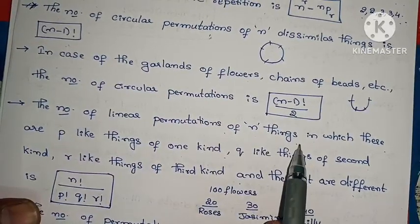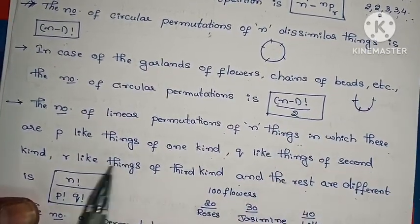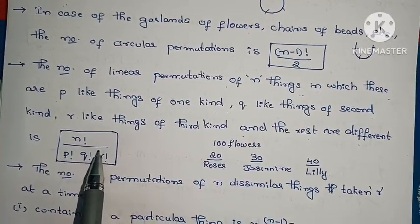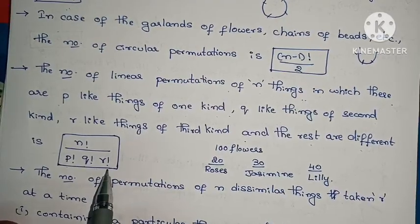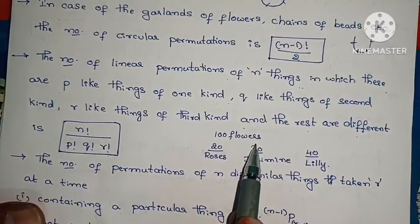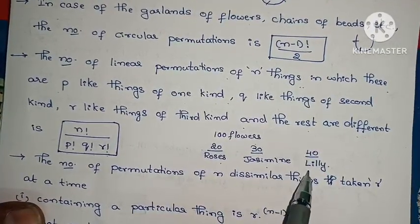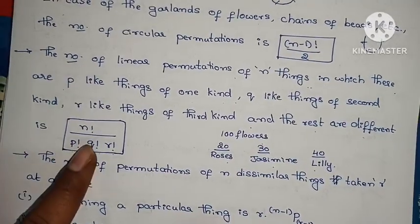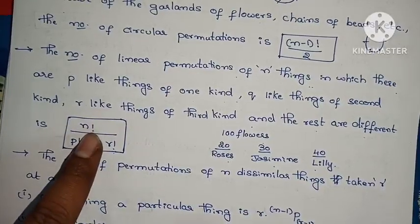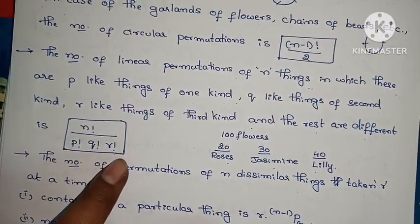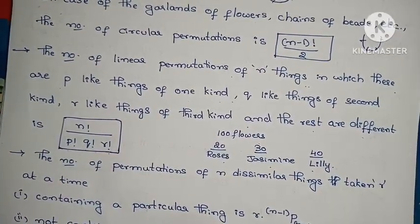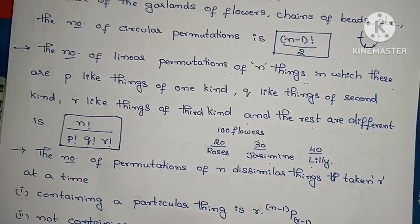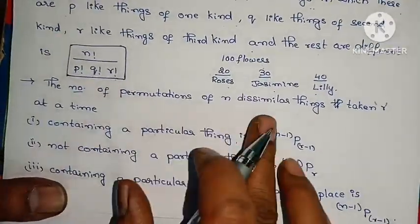The number of linear permutations of n things in which p like things are of one kind, q like things of a second kind, r like things of a third kind, and the rest are all different, is n factorial divided by p factorial into q factorial into r factorial. For example, if there are 100 flowers — 20 roses, 30 jasmines, 40 lilies, and the rest different — we apply this formula.